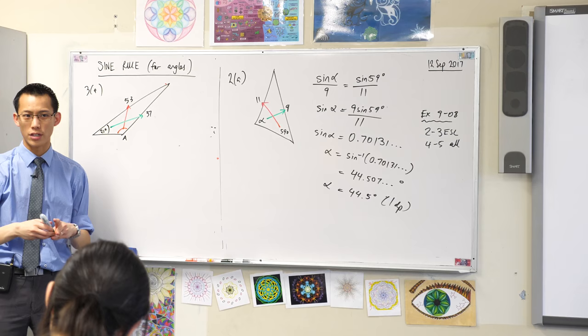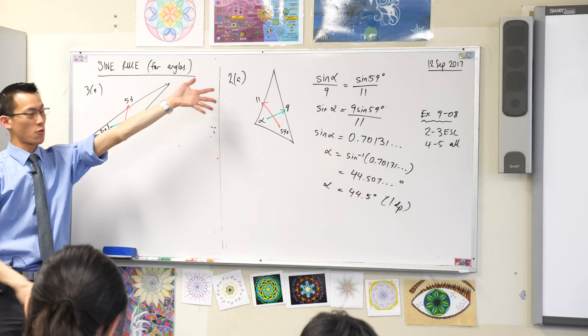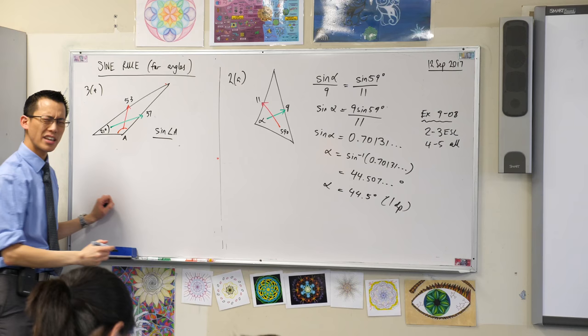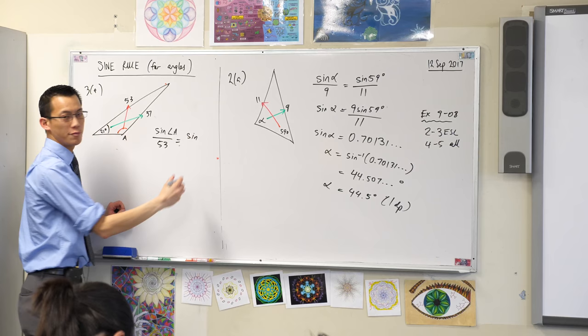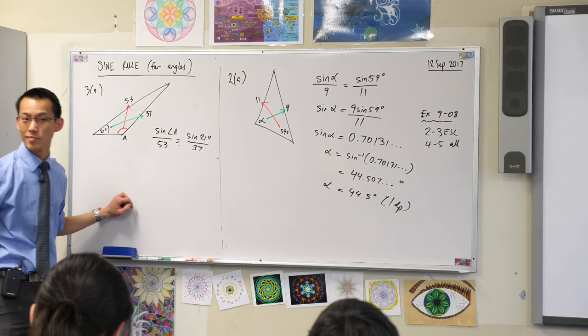Okay, so now that I know what matches with what, I'm going to write the sine rule. Sine of angle A divided by what again? 53, very good. Equals sine of the other angle, 21, on the other side, 37. So far so good.